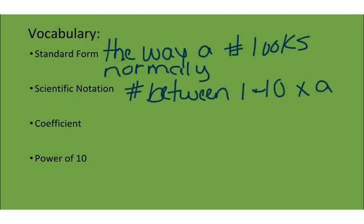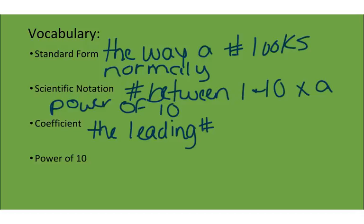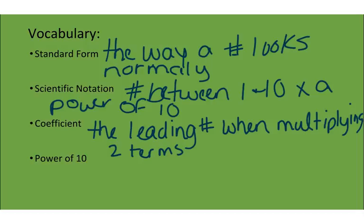A coefficient is the leading number when you're multiplying two terms. We've seen a coefficient expressed like 3x. The coefficient is 3. That coefficient is going to change a little bit today. When we talk about standard notation and scientific notation, it's going to look a little different. It won't have a letter after it, but that's okay. You still know what a coefficient is. It's that leading number when you're multiplying two quantities.